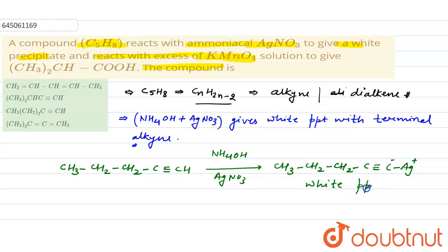Now when this terminal alkyne is treated with KMnO4, oxidation takes place and the formed compound would be CH3-CH2-CH2-CH2-COOH, that is pentanoic acid. This is the compound formed.